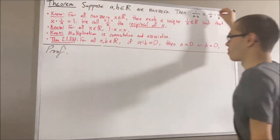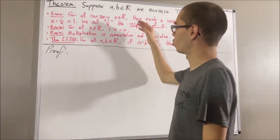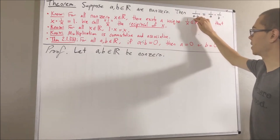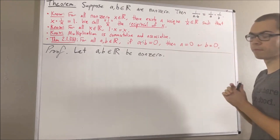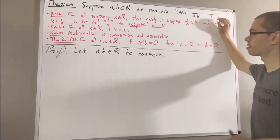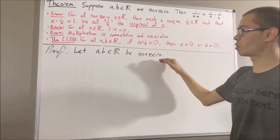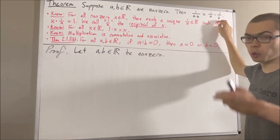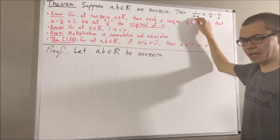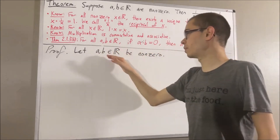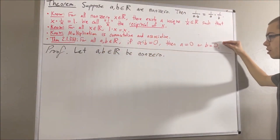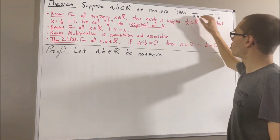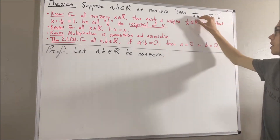Now let's get to proving this theorem. Let's give ourselves two non-zero real numbers a and b. Our whole goal is to show that the reciprocal of a times b is equal to the reciprocal of a times the reciprocal of b. Does this assertion make sense? Well, since a is non-zero, we know that the reciprocal of a is defined. Similarly, since b is non-zero, the reciprocal of b is defined. But does the reciprocal of a times b make sense? Since a and b are non-zero, we know by theorem 2.1.3b we must have that a times b is non-zero, and therefore the reciprocal of a times b makes sense. So all three of these are defined real numbers, and this assertion makes sense.